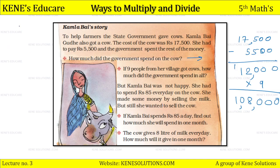85 multiplied by 30: 5 times 3 is 15, carry 1; 8 times 3 is 24, plus 1 is 25, and add a zero — giving 2550 rupees. So Kamla Bai spends 2550 rupees per month on the cow.